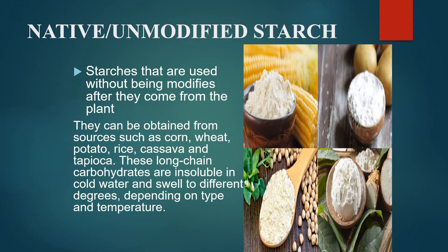What are native or unmodified starches? These starches are used without any modification — they are more natural and no chemical processes are applied to them. They are known as native or unmodified starches. They can be obtained from sources such as corn, wheat, potato, rice, cassava, and tapioca. These long-chain carbohydrates are insoluble in cold water but they do swell when exposed to temperature in combination with water.